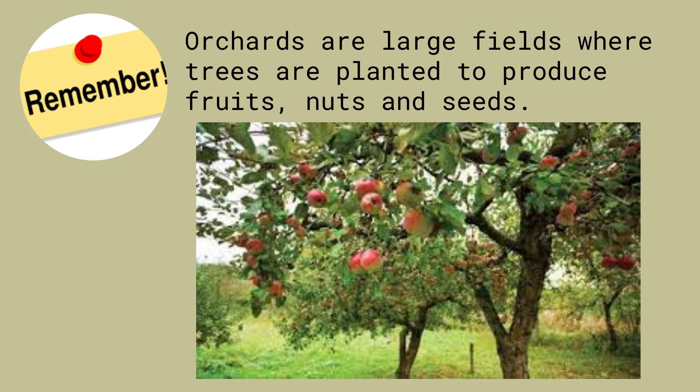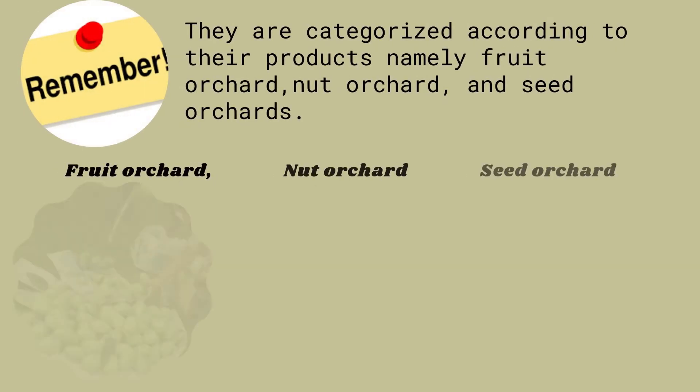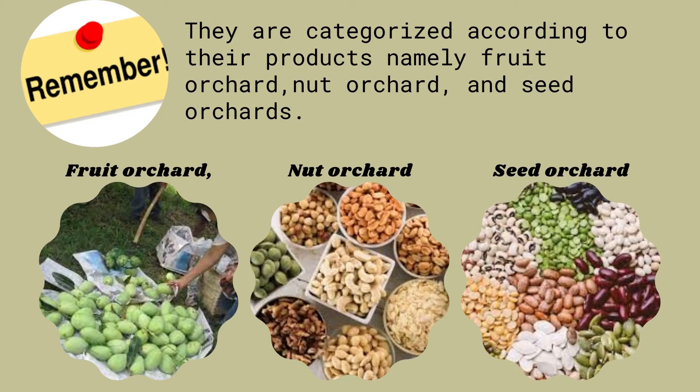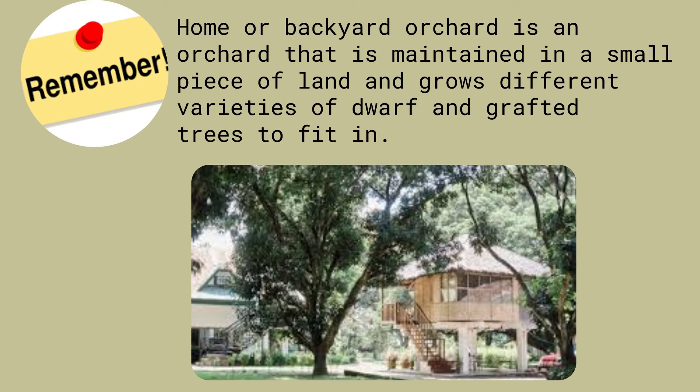To summarize: orchards are large fields where trees are planted to produce fruits, nuts, and seeds. They are categorized according to their products — fruit orchard, nut orchard, and seed orchard. A home or backyard orchard is maintained on a small piece of land and grows different varieties of dwarf and grafted trees to fit the available space.